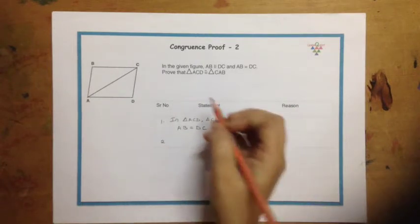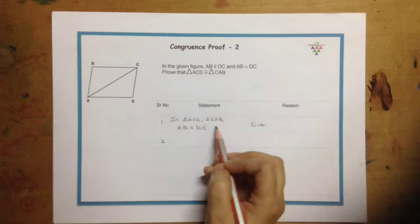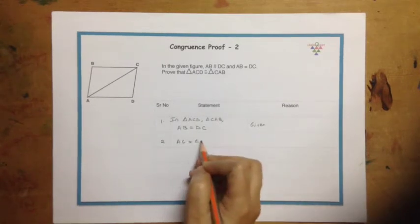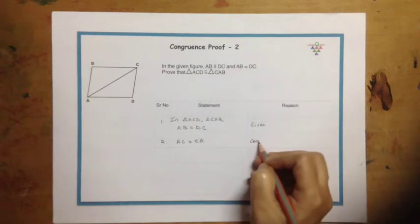Then we will make a mention about the common side, AC and CA. We will say AC is equal to CA. Why? Because it is the common side.